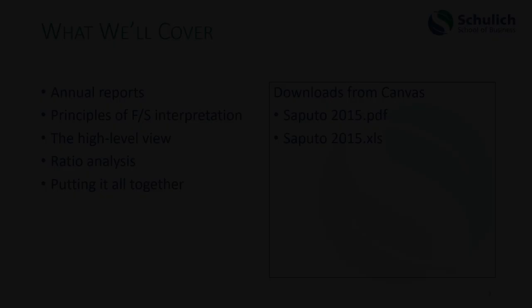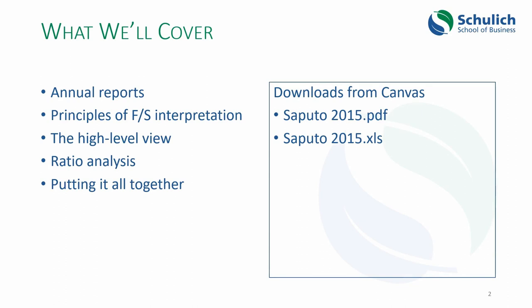We're going to look at the context in which you find the financial statements of a company, which is the annual report, and then I'll discuss some basic principles of financial statement interpretation. We'll look at some techniques to get a high-level view of the statements, then look closer using ratio analysis, and then I'll talk about putting all of these pieces together into a full interpretation of a company's financial statements. If you're working in this course, you should be downloading the financial statements for CEPUDO from 2015 and a corresponding spreadsheet, so you'll be able to practice the calculations.